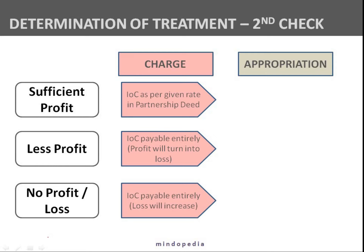Interest on capital as per the given rate in the partnership deed — very simple. Now suppose if it is a charge but the profit is less. For example, suppose the profit given in the question is 30,000 but the interest on capital for the two partners Joy and Sorrow is coming out to be 36,000. What will happen? Profit is less, IOC for the partner is more — what should we do?